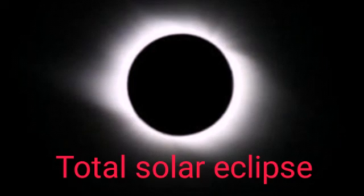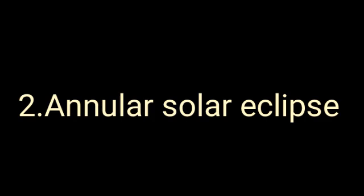Number 2: Annular Solar Eclipse. An annular solar eclipse happens when the moon covers the sun's center, leaving the sun's visible outer edges to form a ring of fire around the moon.